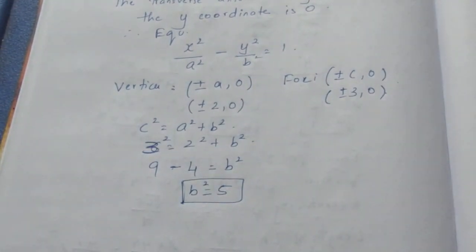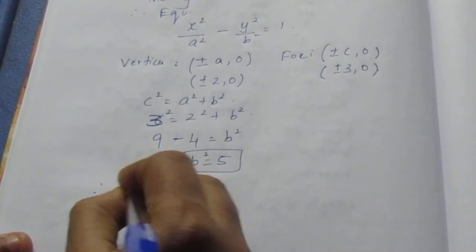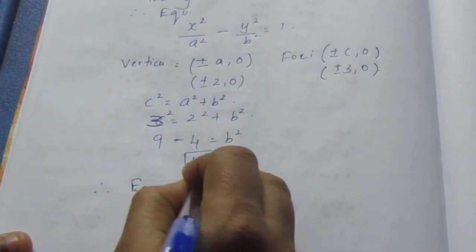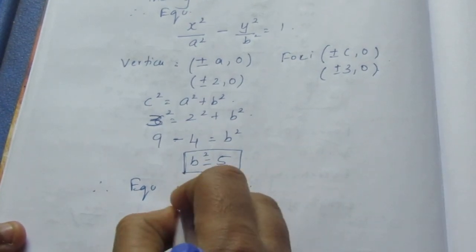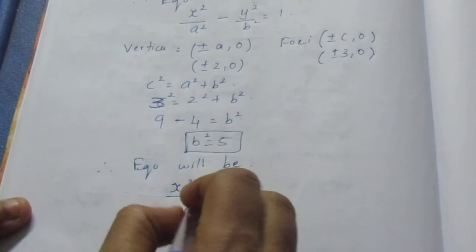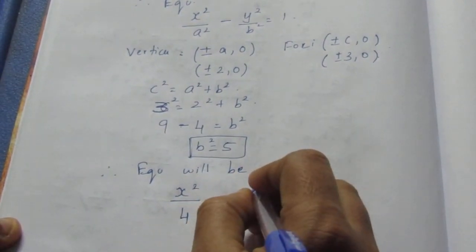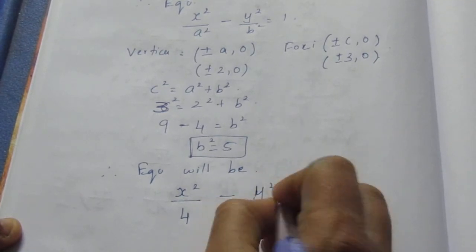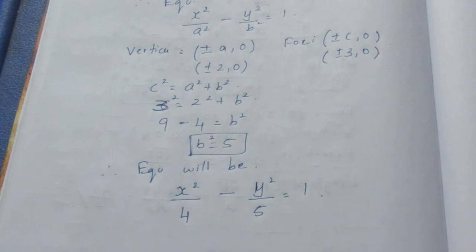So we know b² and we know a² directly. Therefore the equation will be x²/a² - y²/b². Since a is 2, a² is 4, and b² is 5. So x²/4 - y²/5 = 1 is the required equation of the hyperbola.